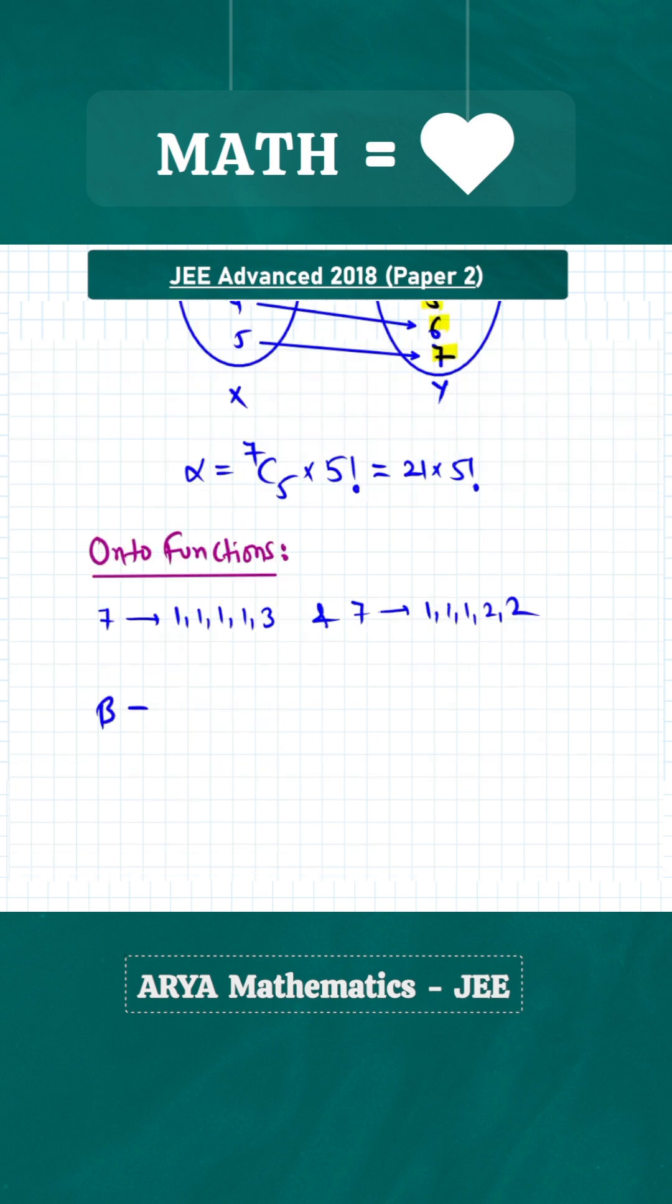β is the number of onto functions. In the first case we get 7! divided by 3! × 4! (because we have 4 groups of equal strength) multiplied by 5!. In the second case we get 7! divided by 2! × 2! × 3! × 2!, and we have 3 groups of equal strength and 2 groups of equal strength.